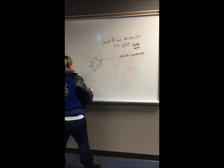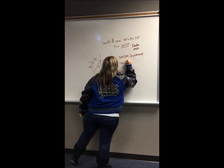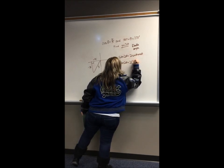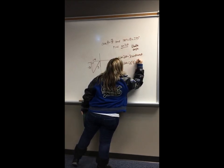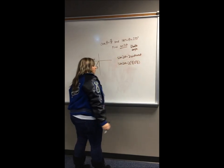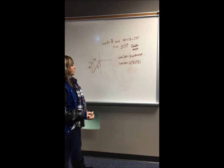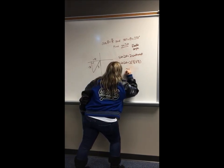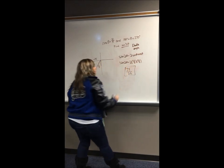Since we have our triangle, we can now plug in what we know. It's going to be 2 times negative 3 over 5 times negative 4 over 5. We put that in the calculator and convert to a fraction, and the answer is going to be 24 over 25.